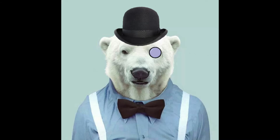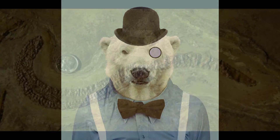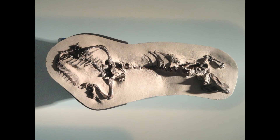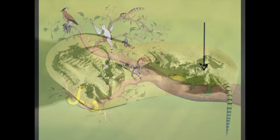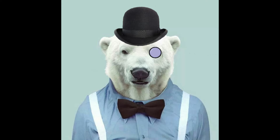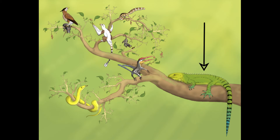Other squamates at Messel were primarily terrestrial. The short-limbed anguid Dermatoposaurus rooted about in the undergrowth, burrowing into the soil to unearth worms and other invertebrates. Two genera of polyglyphondontians were present and could not have been more different. Rotundosaurus was a large herbivorous lizard with leaf-shaped teeth and a row of dorsal spines, while Lutrosaurus was an active semi-aquatic omnivore. One adult male Rotundosaurus measured 1.3 metres in length and weighed an estimated 8 kilograms, making it the most massive non-Archosaurian animal from the Eocene of Europe.